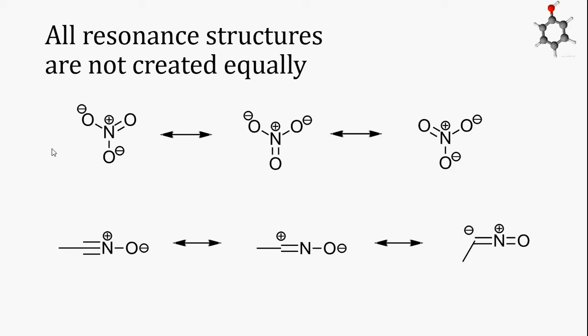Because the formal charges are different between the three structures, the three structures are not equivalent. You can also tell that the three different structures have different numbers and types of bonds. In the structure of the nitrate ion, there are two nitrogen-oxygen single bonds and one nitrogen-oxygen double bond in each of the three structures. In the structure of acetonitrile oxide, the number of single, double, and triple bonds between carbon and nitrogen and nitrogen and oxygen changes. These three structures on the bottom are not created equally. We are going to learn a few rules that can help us assess when a resonance structure is more important, and when a resonance structure is not particularly significant for explaining the structure and behavior of a molecule.